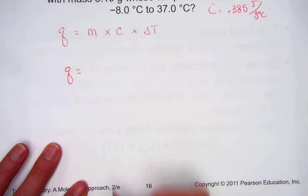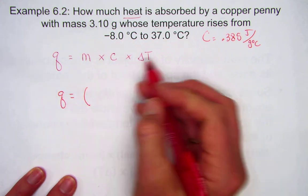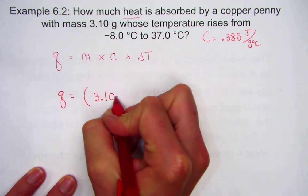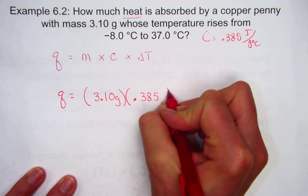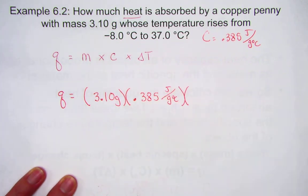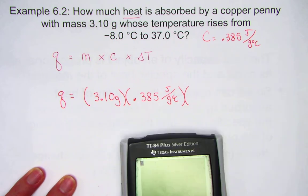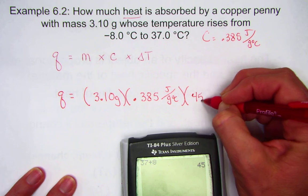We're calculating Q, standing for heat energy measured in joules. The mass given to us is already in grams: 3.10 grams, times the constant we looked up in our chart, 0.385 joules per gram degrees Celsius. The change in temperature — thinking of the number line, if it started at negative 8 and climbed all the way to 37, we are actually adding those, for a total change of 45 degrees Celsius.